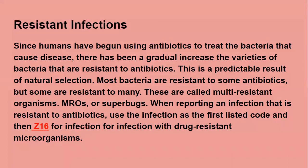Resistant infections: since humans have begun using antibiotics to treat the bacteria that cause disease, there has been a gradual increase in the varieties of bacteria that are resistant to antibiotics. This is a predictable result of natural selection. Most bacteria are resistant to some antibiotics, but some are resistant to many — these are called multi-resistant organisms, or MROs, also known as superbugs. When reporting an infection that is resistant to antibiotics, use the infection as the first listed code and then Z16 for infection with drug-resistant microorganisms.